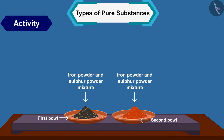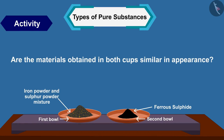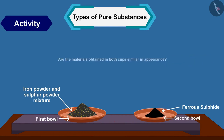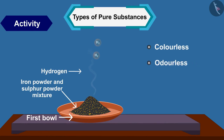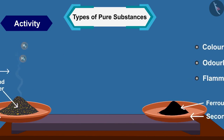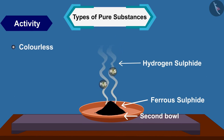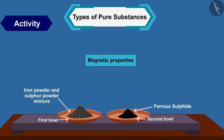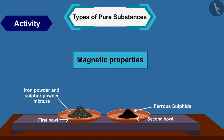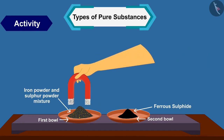Heat the mixture in the second bowl until it becomes red at high heat, then remove the flame and allow the mixture to cool. Are the materials obtained in both cups similar in appearance? The gas obtained in cup one is hydrogen — it is colorless, odorless, and flammable — while the gas obtained in cup two is hydrogen sulfide, which is colorless and smells like rotten eggs.